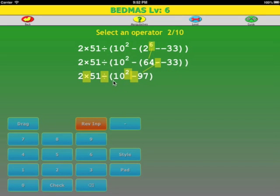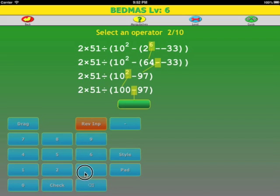We have brackets. There is exponent and there is subtraction. We do the exponent first. 10 squared is 100. One operator left in the brackets. 100 minus 97 is 3.